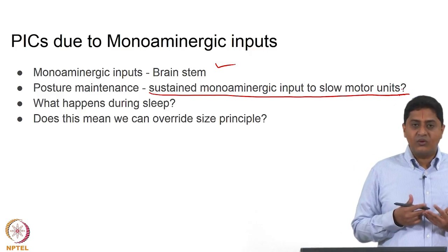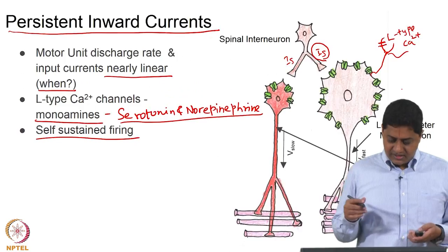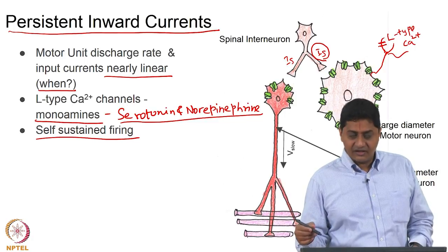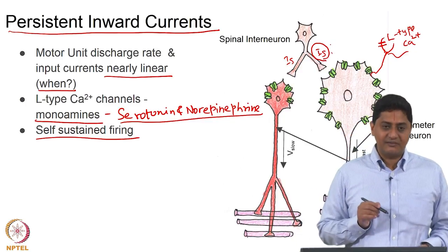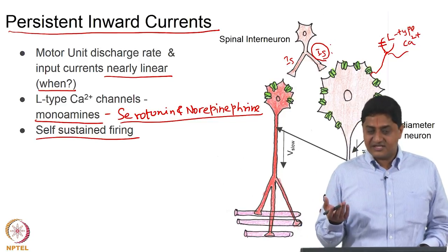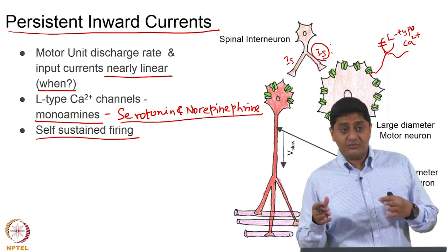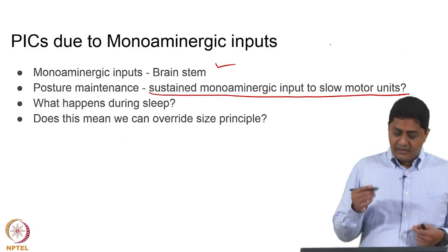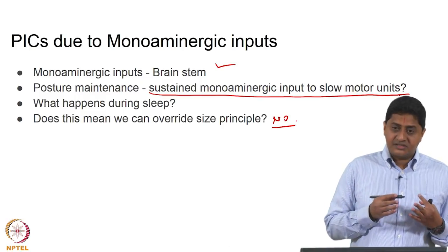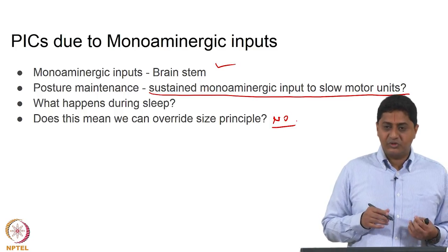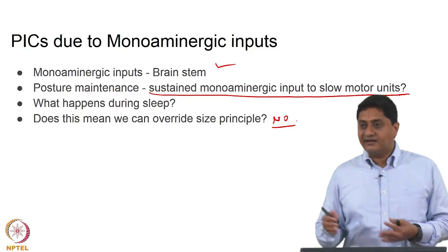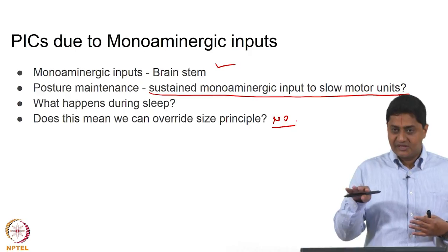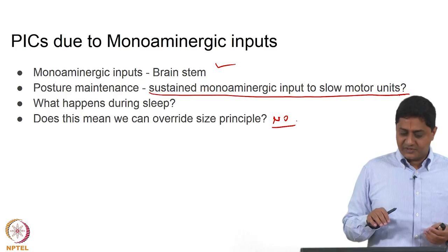Does this mean I can overwrite the size principle? By having L-type calcium channels, monoaminergic input, and inward current, I could increase the force for a given synaptic current. Does that mean I could override the size principle — could a larger motor unit be recruited first? The answer is no. Even with monoaminergic input, it is the smaller motor units that are recruited first, then the larger, then the faster motor units. Size principle continues to be a relatively universal principle.